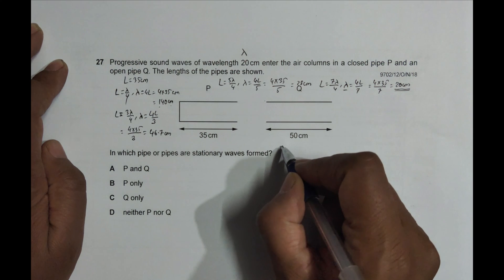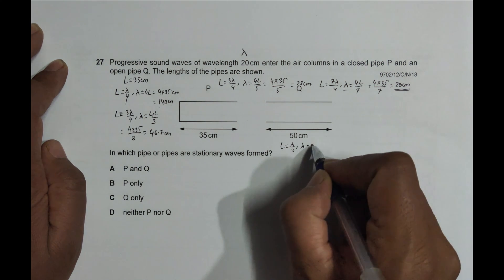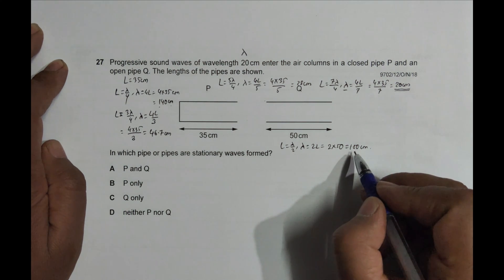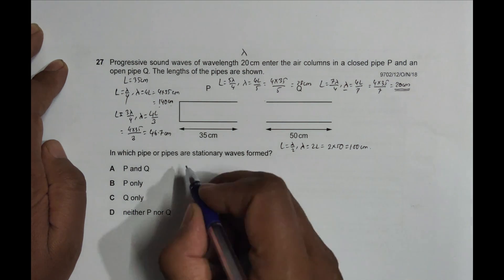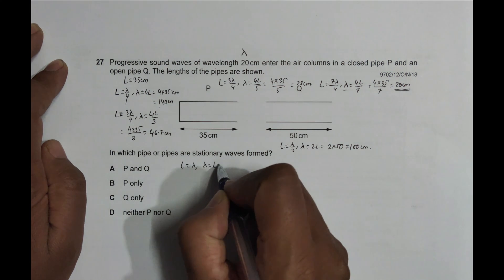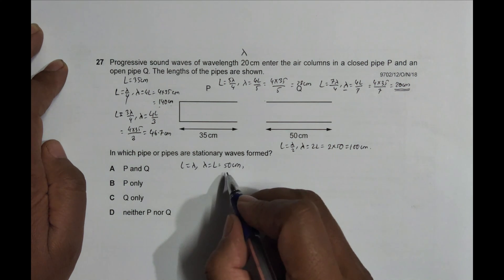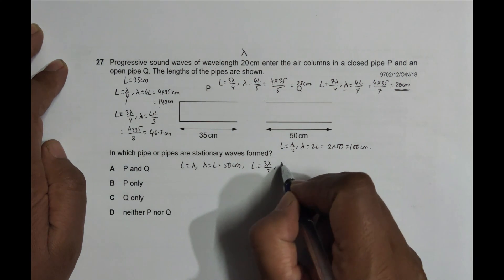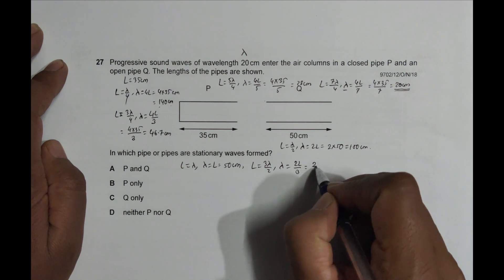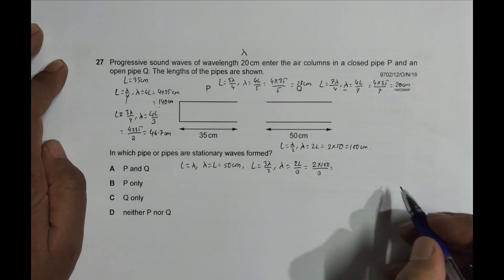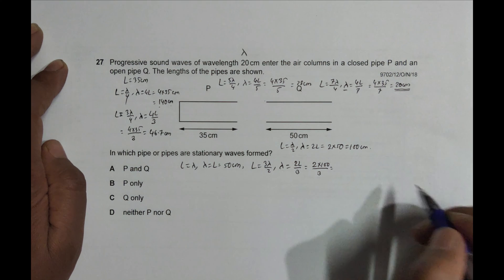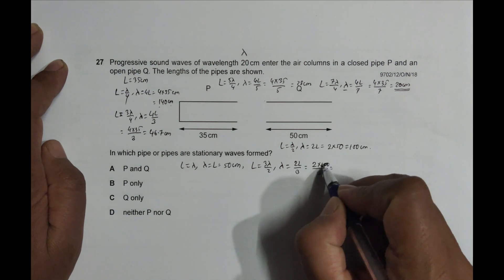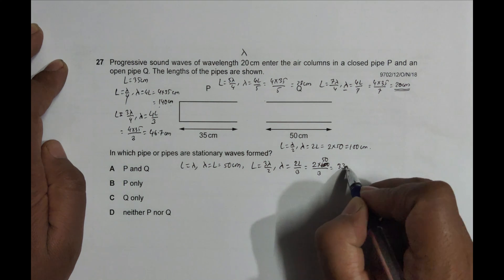Now let's try the open pipe Q. The first condition is L = λ/2, so λ = 2L = 2 × 50 = 100 centimeters. Next condition: L = λ, so λ = L = 50 centimeters. Third condition: L = 3λ/2, giving λ = 2L/3 = 100/3 = 33.3 centimeters. None of these equal 20 cm, so not correct yet.